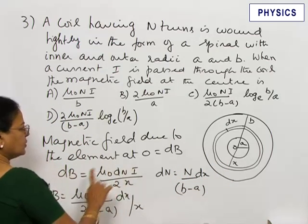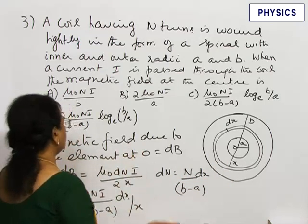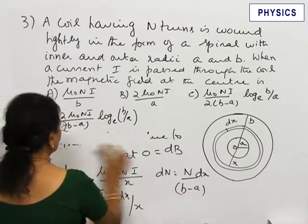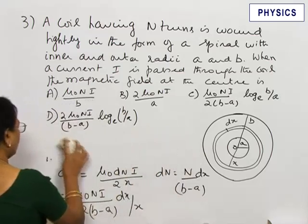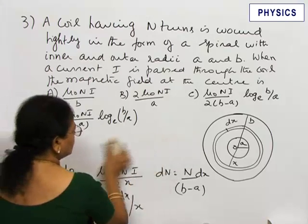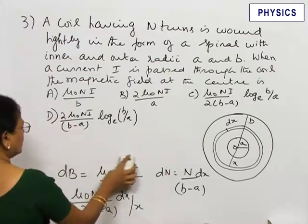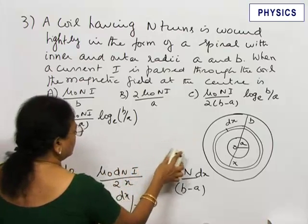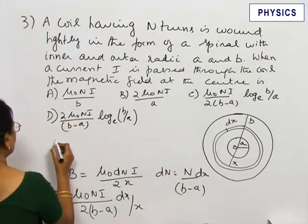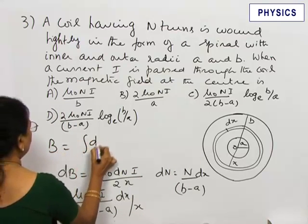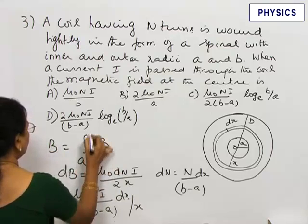This is the magnetic field due to the small element we are considering. We can assume the total magnetic field is made up of the magnetic field due to such elements whose distance from the center varies from A to B. That means to get total B, integrate dB between A and B.